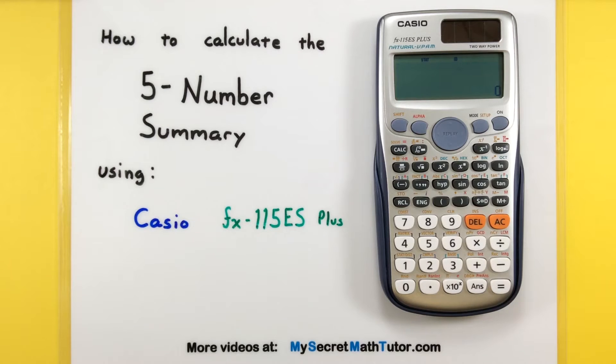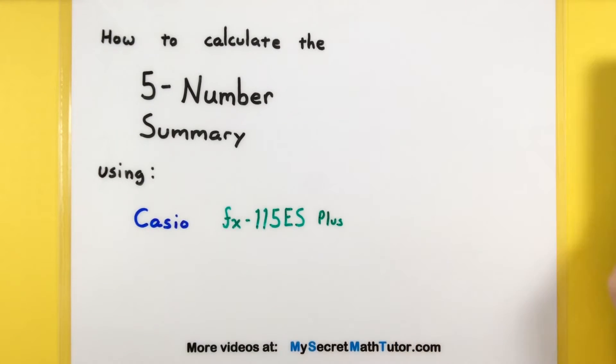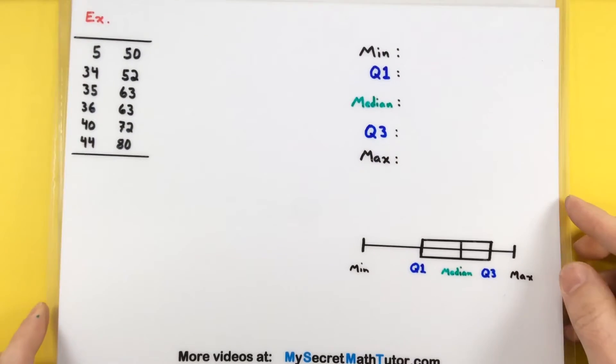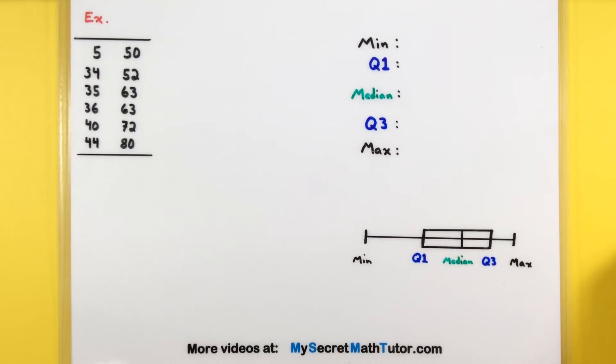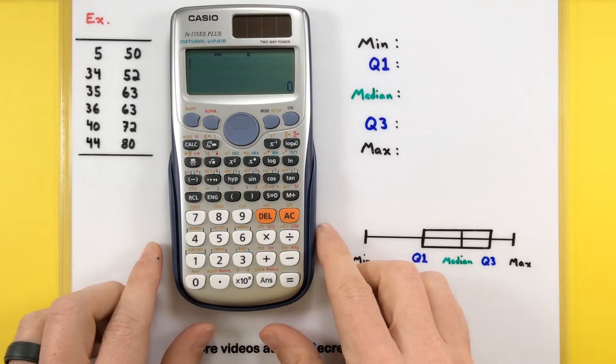Hello and welcome to My Secret Math Tutor. For this video we're going to calculate the five-number summary using a Casio FX 115ES+. This is a wonderful little calculator that does a lot of different things and it can especially do a few of our statistical things.